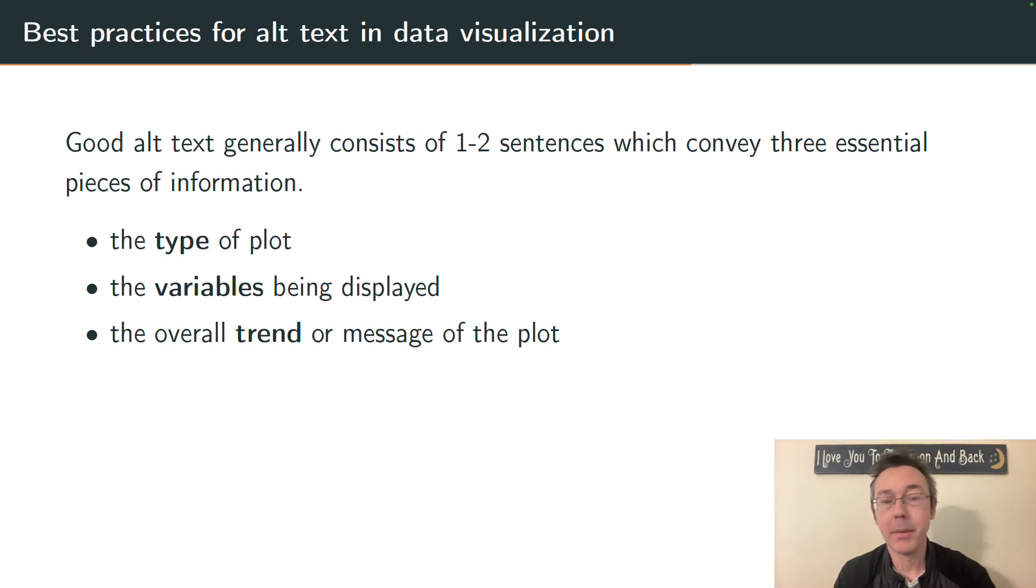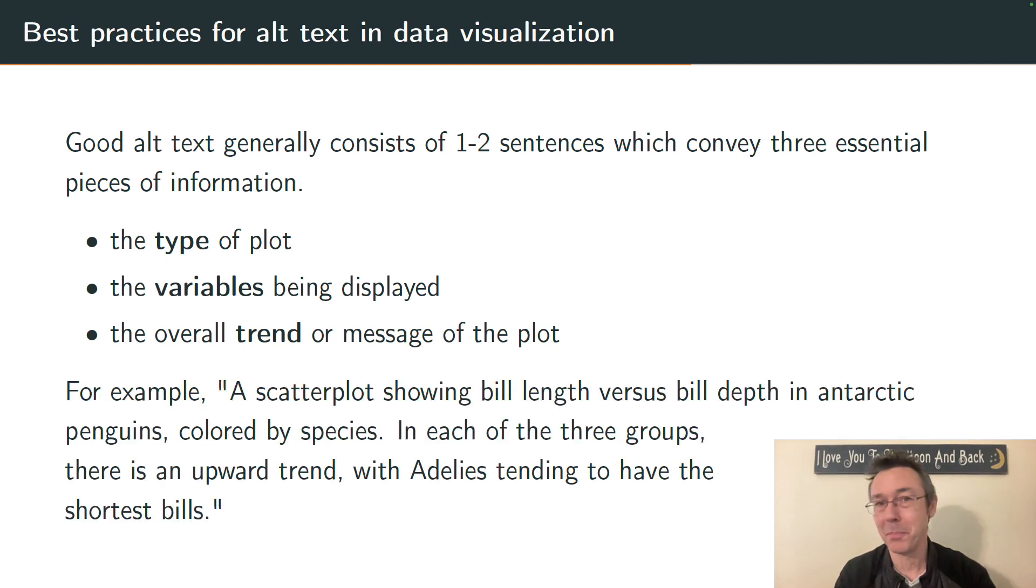So for instance, in a penguin scatter plot from the standard penguins dataset, you might say: a scatter plot showing bill length versus bill depth in Antarctic penguins colored by species. In each of the three groups, there's an upward trend with the Adelies tending to have the shortest bills. So here I'm hitting each one of those three items, each one of those three things that I have in the bullet points, and I'm doing it briefly. You don't want this to be overly verbose, but you do want to get all three of those key pieces of information.